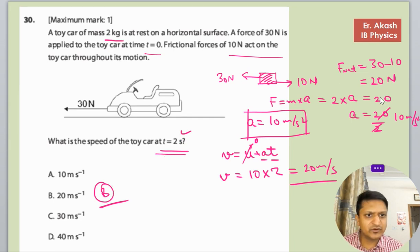So this is how you have to solve this question. First of all, you have to calculate the F net. After F net, you have to calculate the acceleration. And after acceleration, you have to calculate the final velocity at t equals to 2 seconds.